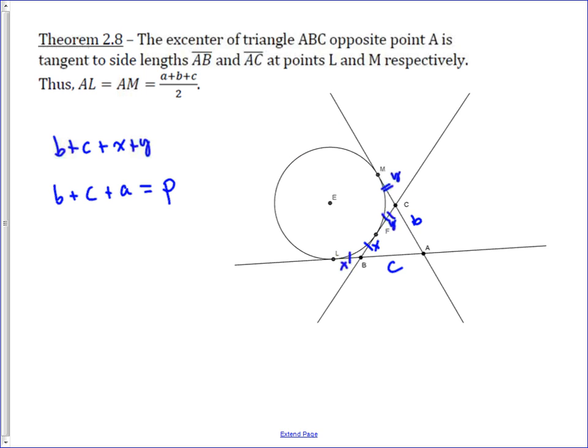We know that B plus C plus X plus Y is the perimeter, but we also know that X plus C equals AL, and B plus Y equals AM. So we get this interesting result that AL plus AM equals the perimeter.